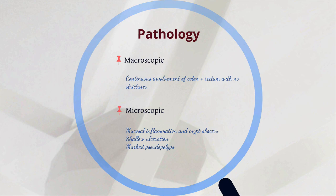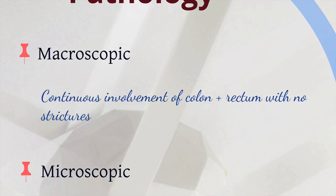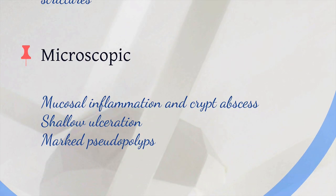In terms of pathology, we can look at both macroscopic and microscopic features. Macroscopically, the typical pathology is continuous involvement of the colon and rectum with no strictures. Microscopically, which often comes up in written exams, look for the characteristic triad of mucosal inflammation and crypt abscesses, shallow ulceration, and marked pseudopolyps.